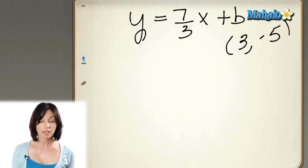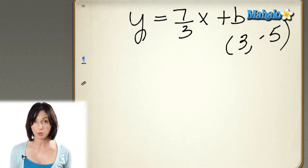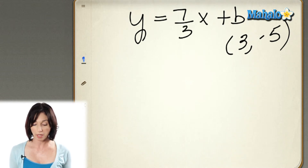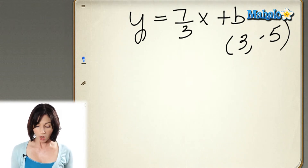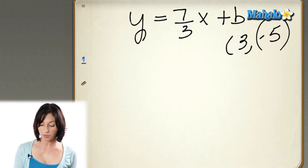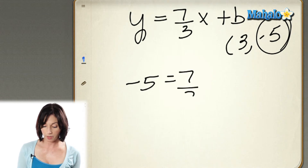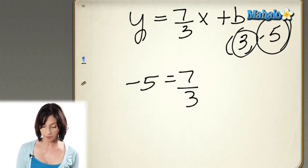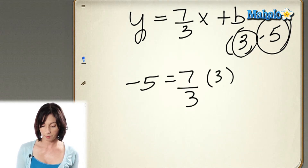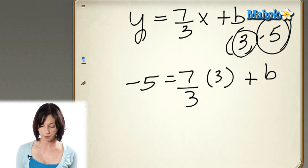Now, it doesn't actually matter which point you use. Both of those points will solve this equation, but I'm just going to pick this one and do it. So I put negative 5 in for my y, and then I put 3 in for x, and plus b. b is what I'm trying to find.